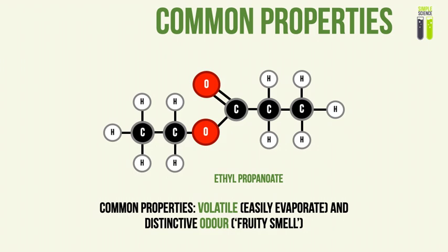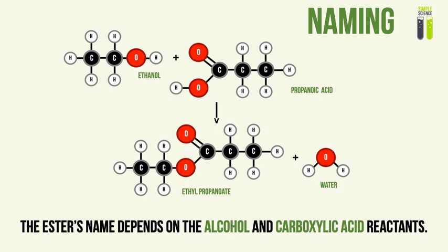I really enjoyed recognizing that during my chemistry sessions back in the day. Now, the ester's name depends on the alcohol and the carboxylic acids that are used to create the ester. For example, this ester — ethyl propanoate — is made up of ethanol and propanoic acid.